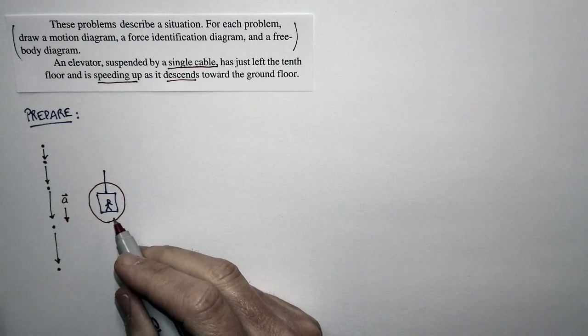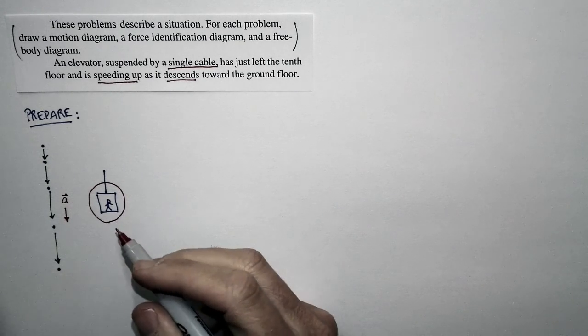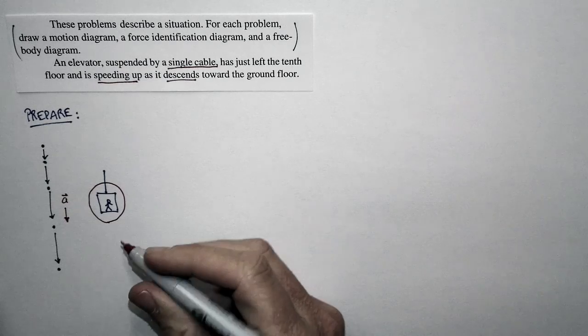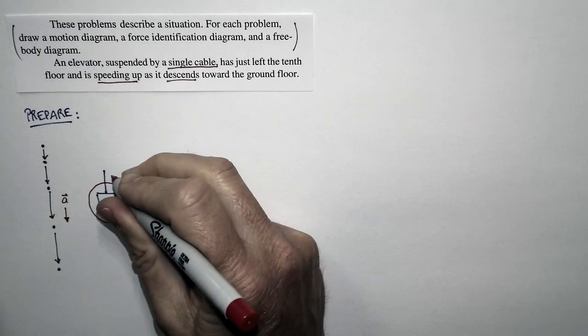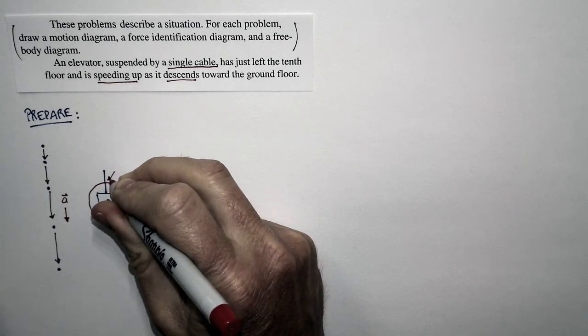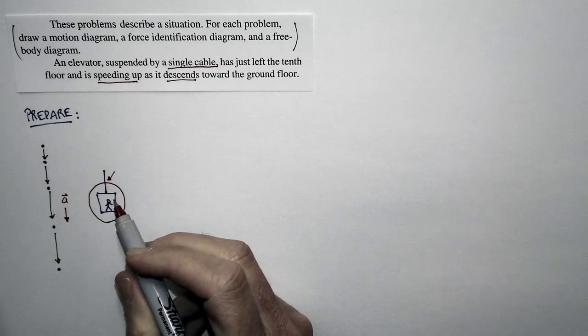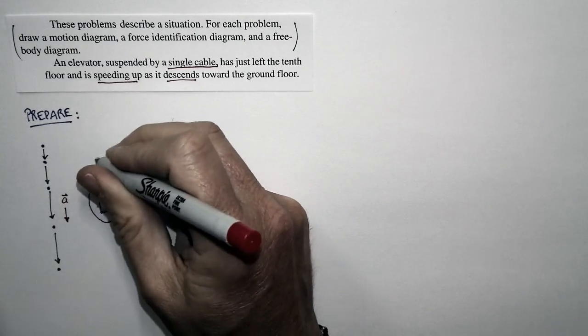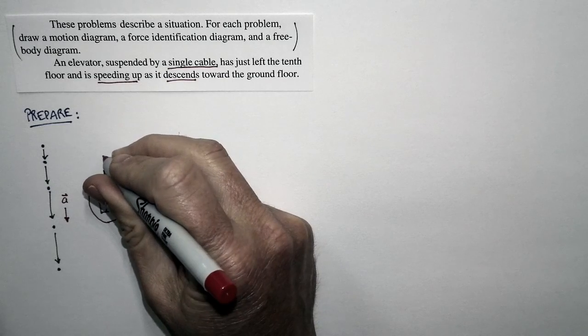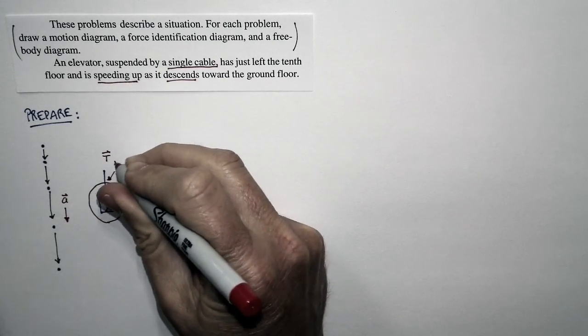We're considering the elevator in isolation of everything else in the universe. And we're just going to consider this: What objects touch it? And there is precisely one thing. There's an elevator cable. And that cable can exert exactly one type of force. That's a tension force.